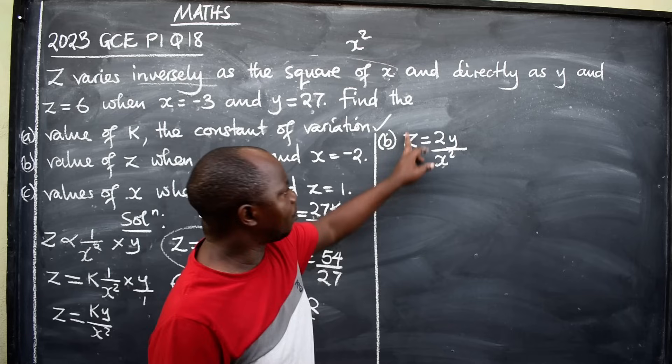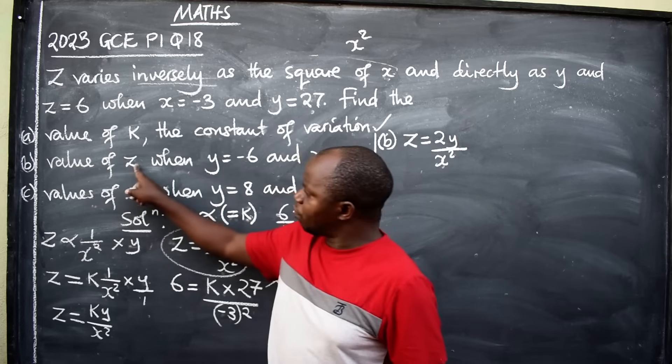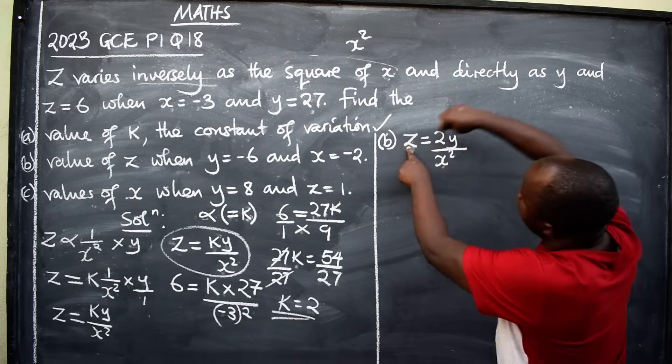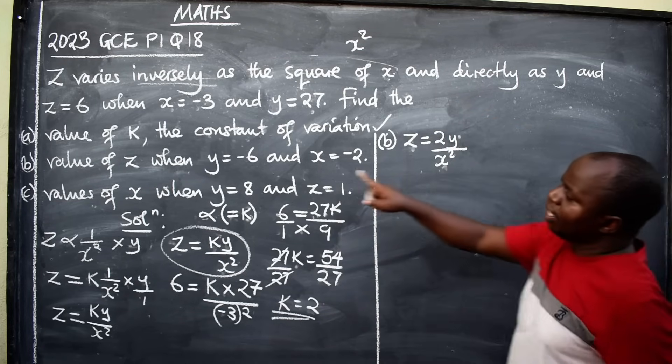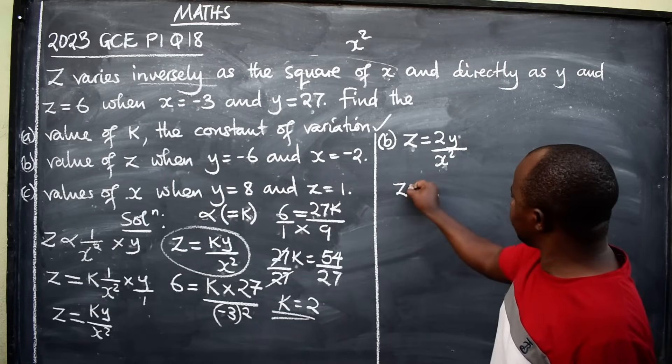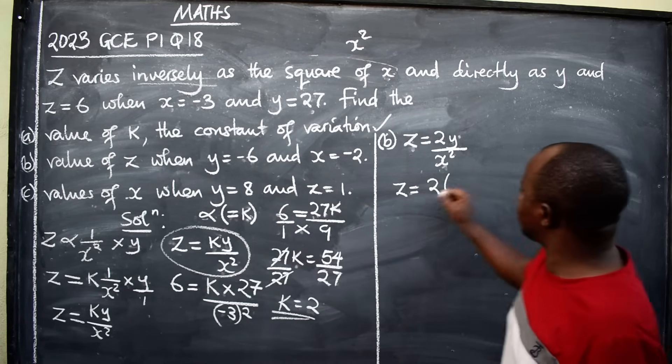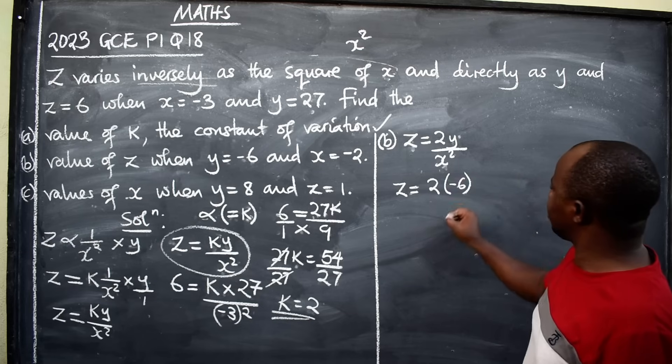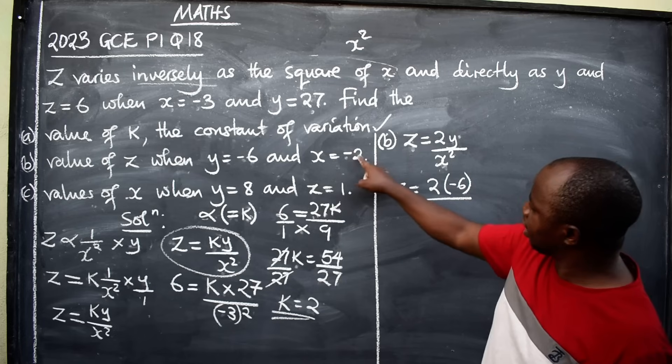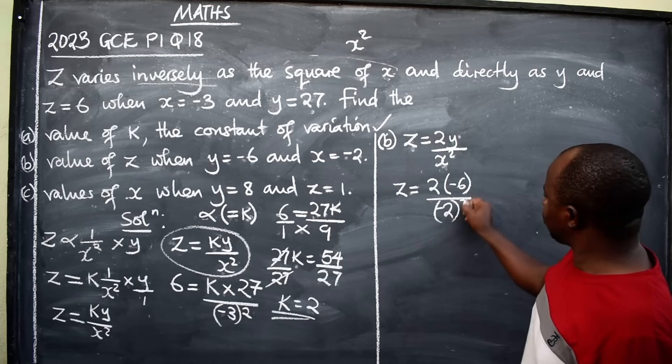Now, having this equation, let's now find b. We start substituting. Find the value of z. We want to find the value of z here. For us to find the value of z, we need y and x. What are they saying? When y is equal to negative 6. So we are saying z is equal to 2, y here they are saying we put negative 6. Negative 6, over x here, they are saying negative 2. So we are going to say negative 2 here. Remember, it's squared.